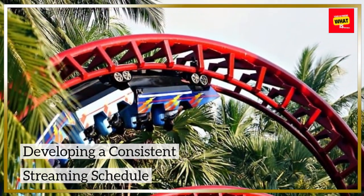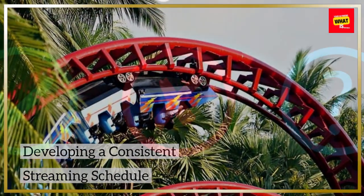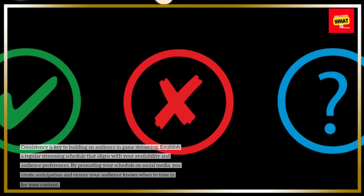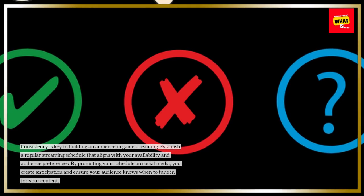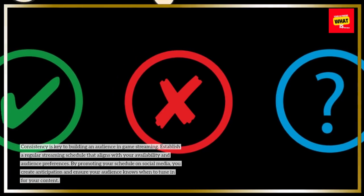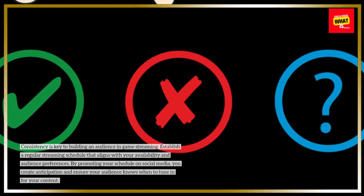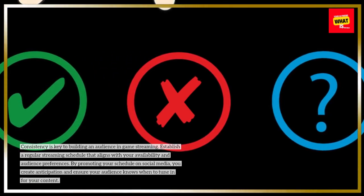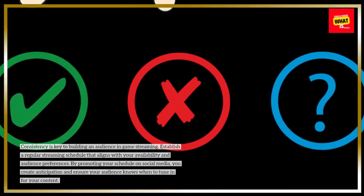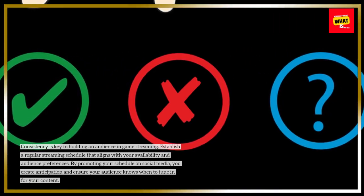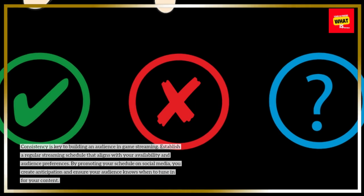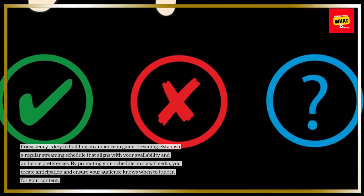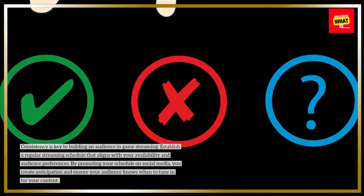Developing a consistent streaming schedule. Consistency is key to building an audience in game streaming. Establish a regular streaming schedule that aligns with your availability and audience preferences. By promoting your schedule on social media, you create anticipation and ensure your audience knows when to tune in for your content.